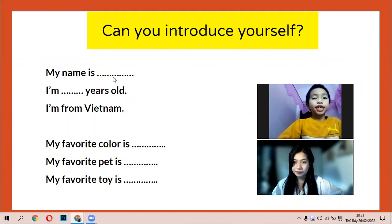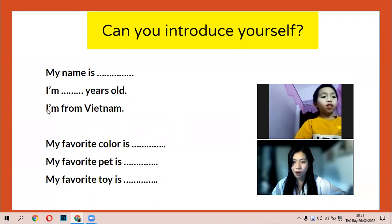My name is Ken. How old are you? I'm six years old. Okay, where are you from? I'm from Vietnam. What's your favorite color? This is a yellow. Okay, yellow. What's your favorite pet? Do you like dog or cat? Dogs. What's your favorite toy? Do you like robots or bike? Robot, robot.